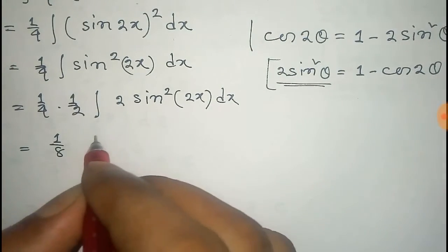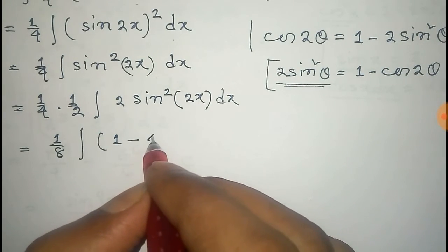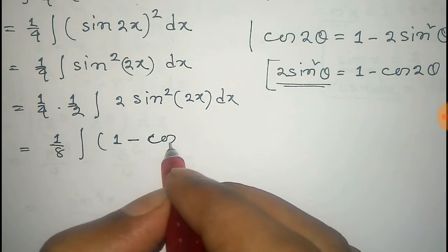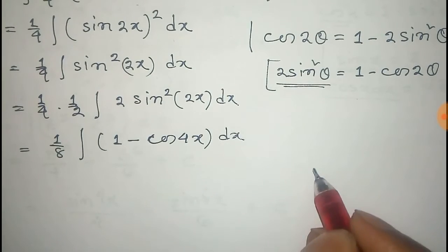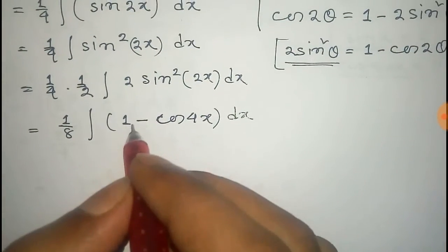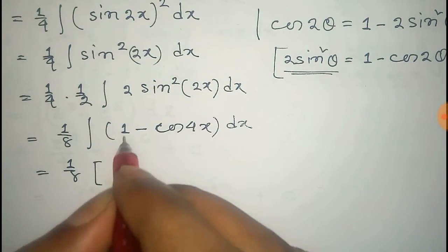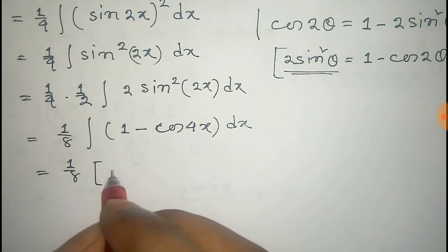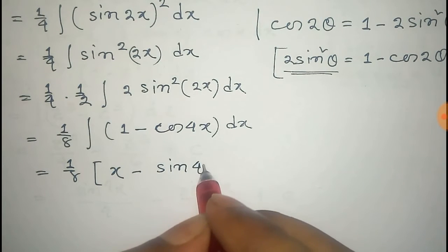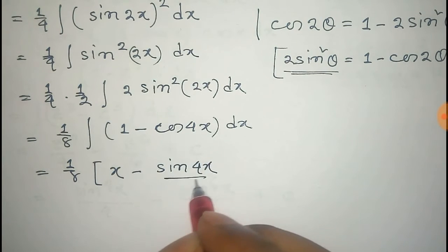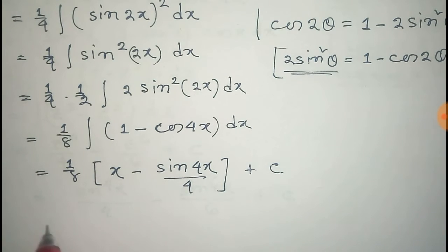Applying this, we get one-eighth integral of (1 − cos(4x)) dx. Now integrating: the integral of 1 is x, and the integral of cos(4x) is sin(4x)/4, plus the constant of integration C.